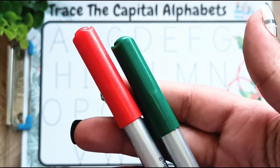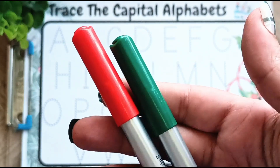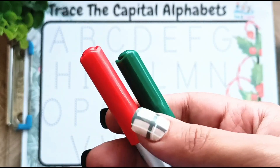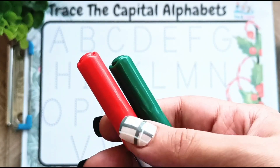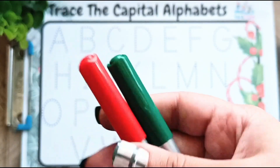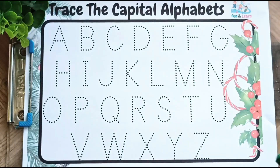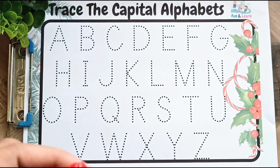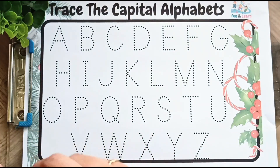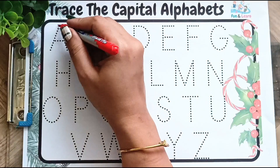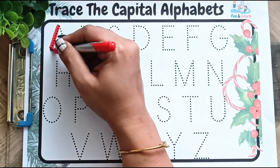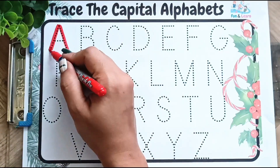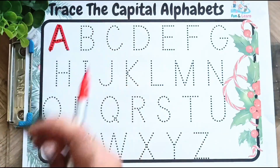Hello kids! Let's trace the capital alphabets today in the colors of Holly — that is the color red and the color green. This is our Holly. Let us start: A, A for apple.